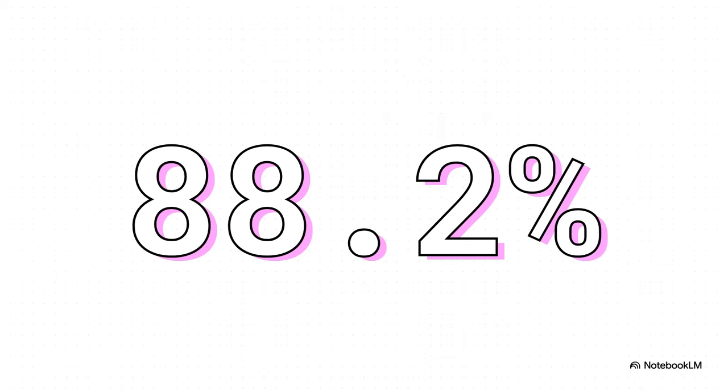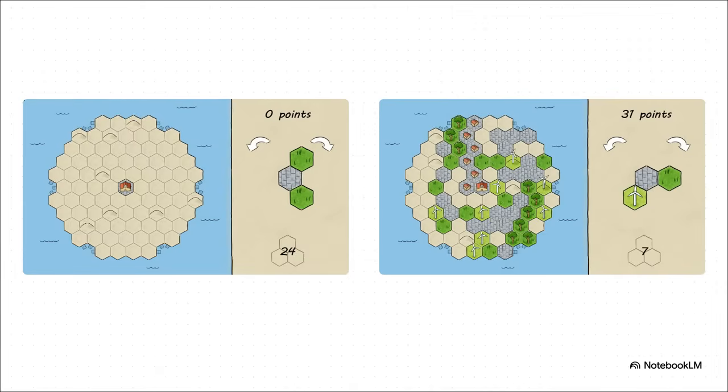Yeah, let's just park on this number for a second. 88.2% on online mind to web. This isn't some simple, sterile test. This benchmark throws realistic, multi-step tasks at the agent on live websites. Getting a score that high is a massive jump over the competition. And it shows this agent is genuinely good at handling the messy, complex reality of the modern web.